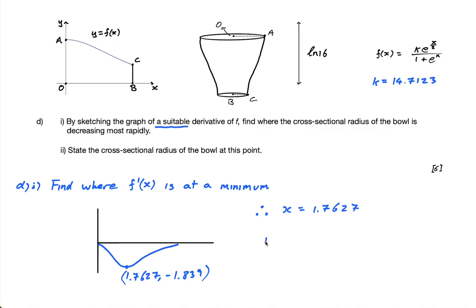And then for part two, it says state the radius of the bowl at this point. Now a common mistake people would make is they put in this, or at least the positive version of that, but that's actually not correct. We need to find,